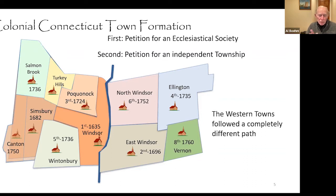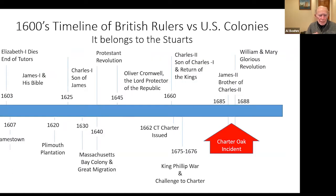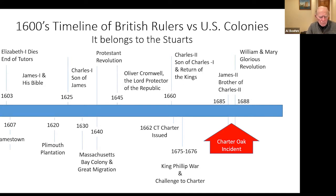The western towns follow a completely different path — that's what we're going to be talking about tonight. Here's a timeline of this story, covering the 17th century. The upper part covers what was going on in England, the bottom part what was going on in America. In 1603, Elizabeth I dies and it's the end of the Tudors. James I — also James VI of Scotland — comes into power. He's about 35 years old and had been king of Scotland for 34 years, coronated on his first birthday. As he was traveling from Scotland, two Puritan ministers present him with a petition.